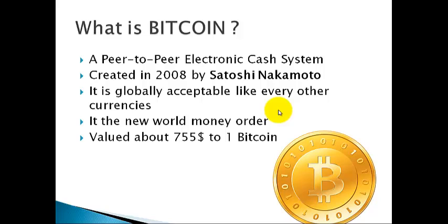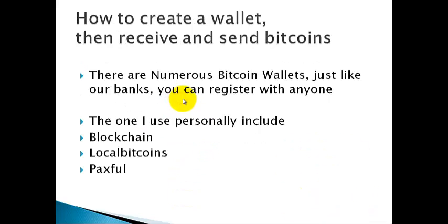Bitcoin is an electronic currency that is globally acceptable throughout the world right now. It's a peer-to-peer electronic system in the sense that once you have a Bitcoin account, you can directly send payments from one person to the other without having to reveal your identity — just get the receiver's Bitcoin address, then send your payment. It was actually created in 2008 by someone who calls himself Satoshi Nakamoto. As at the time of recording this video, Bitcoin is worth about 755 dollars, meaning once you have one Bitcoin you have seven hundred and fifty-five dollars.